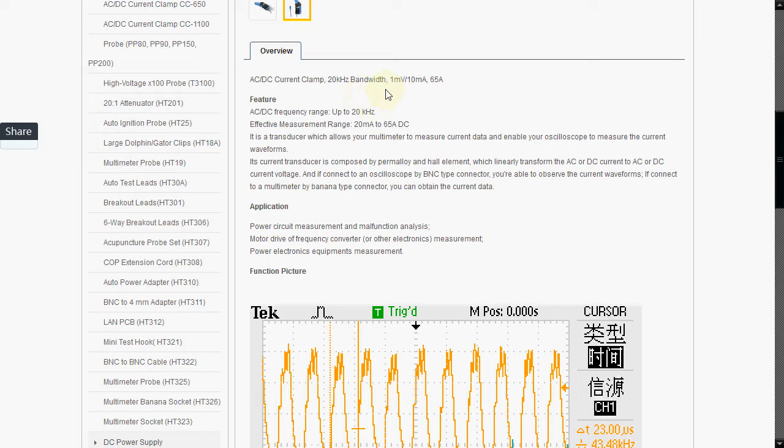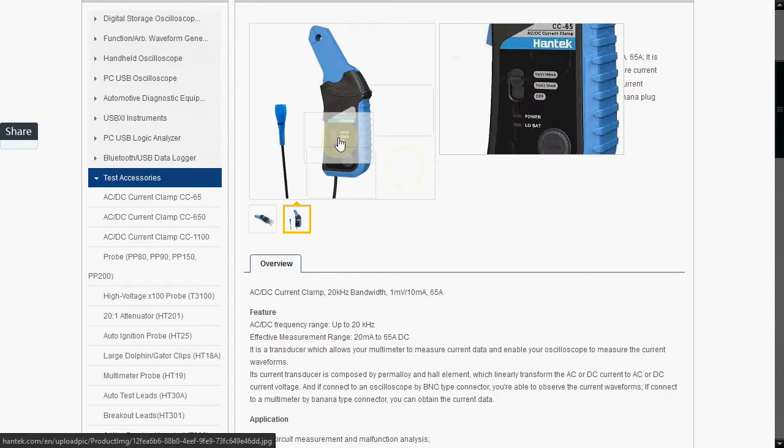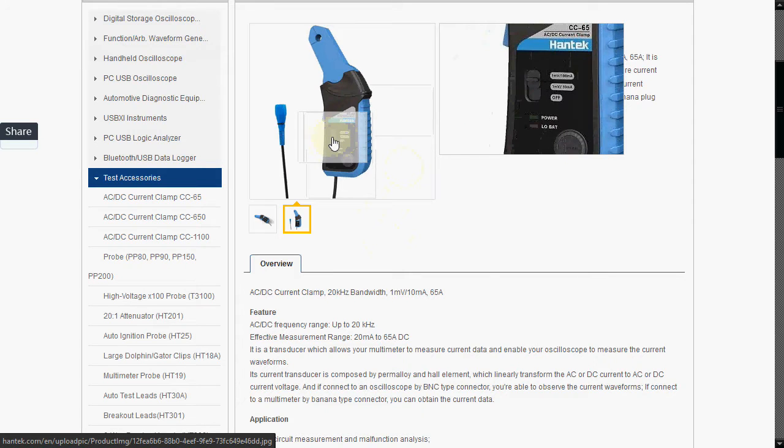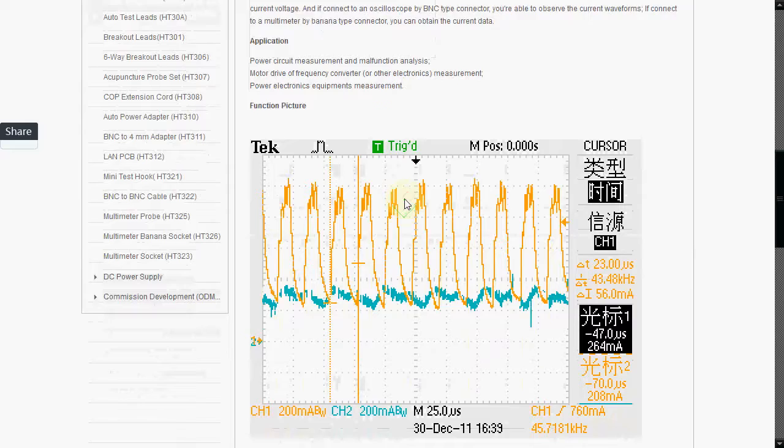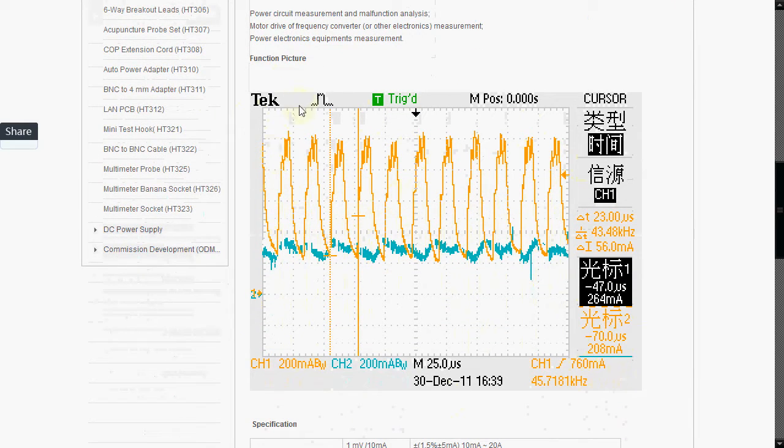And you've got 1mV per 10mA, or you can actually switch that to 1mV per 100mA using the range selection switch, which is this switch here. And it measures from 0, well actually it measures from 20mA up to 65A DC.